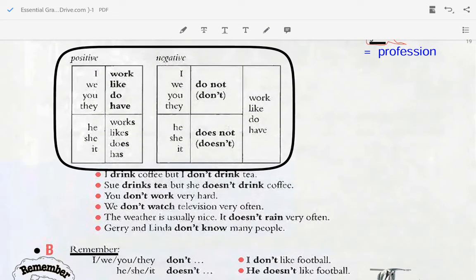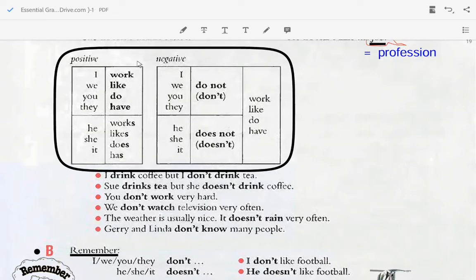The form: positive or affirmative - I work, we like, you do, they have, she works, he works, she likes, it does, it has. For example, in negative we use I do not work.